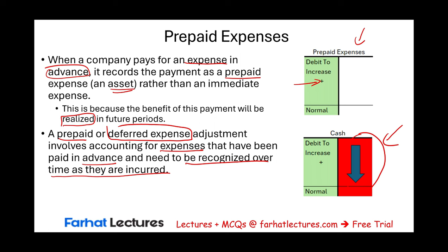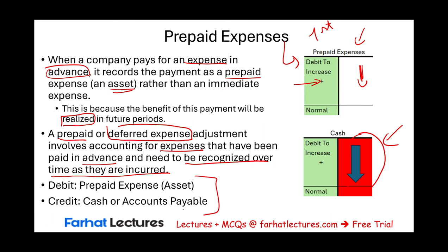What's going to happen is: first we establish a prepaid, then eventually the prepaid will go down as the expense goes up. The initial recording of the prepaid looks like this: we debit a prepaid — increasing an asset — and reduce cash. This is how a prepaid is initially created and put on the books.